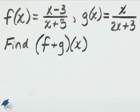If f of x equals x minus 3 over x plus 5, and g of x equals x over 2x plus 3, find f plus g of x.